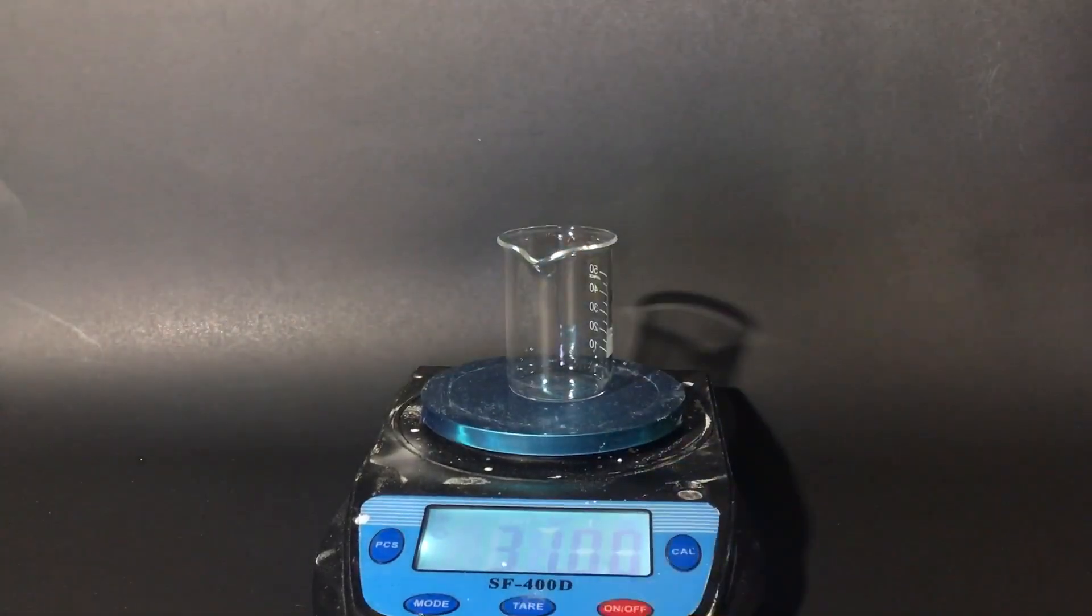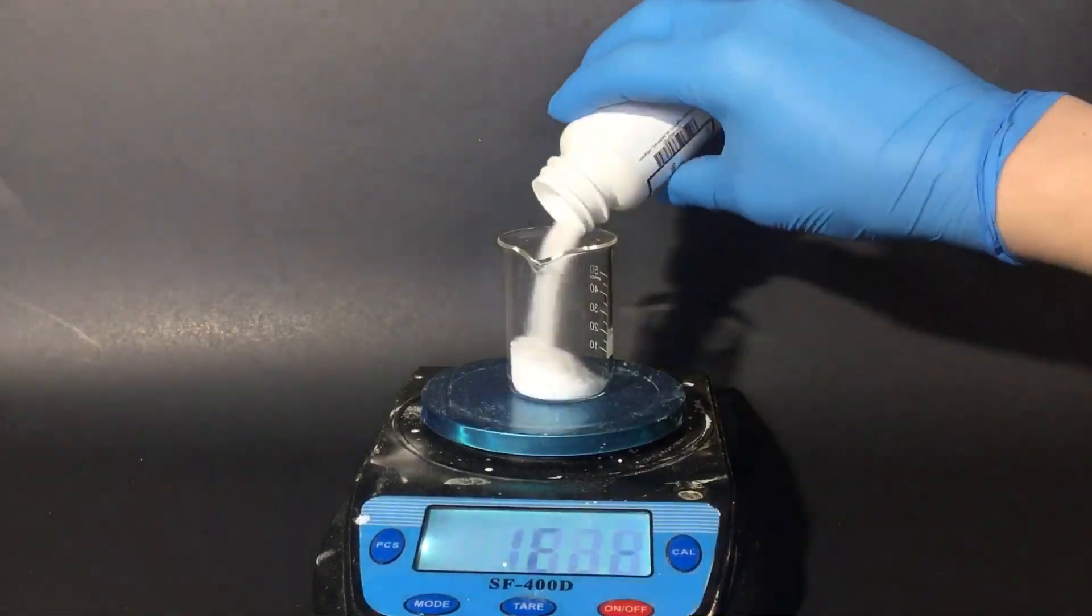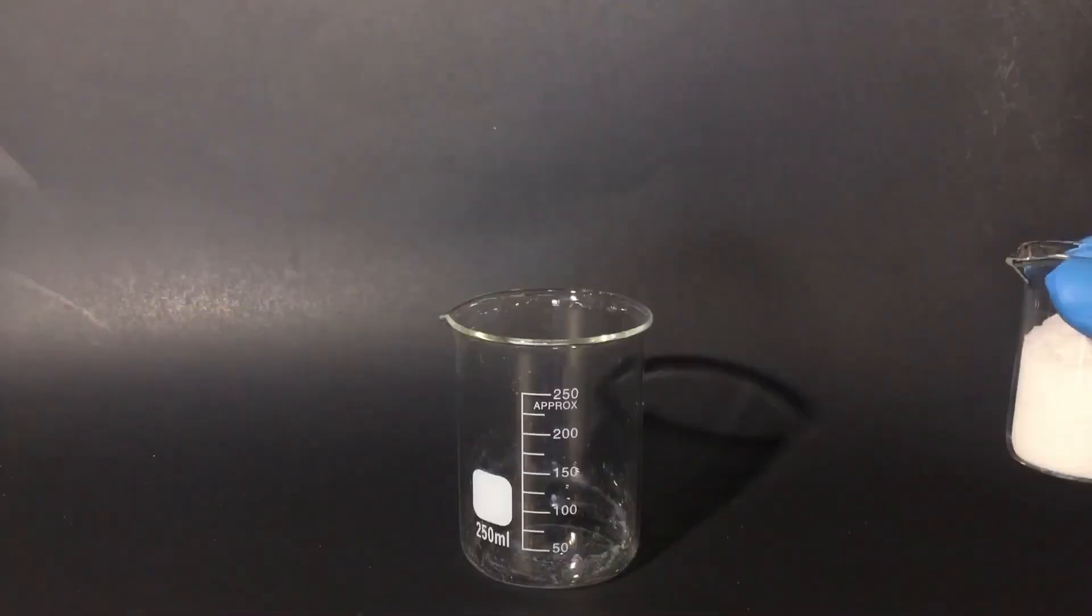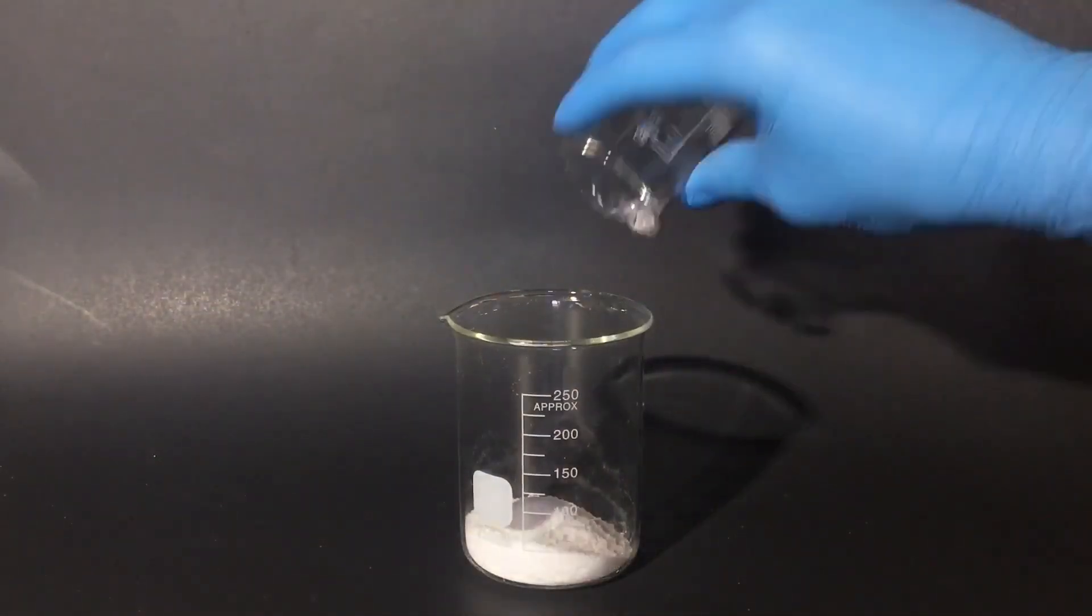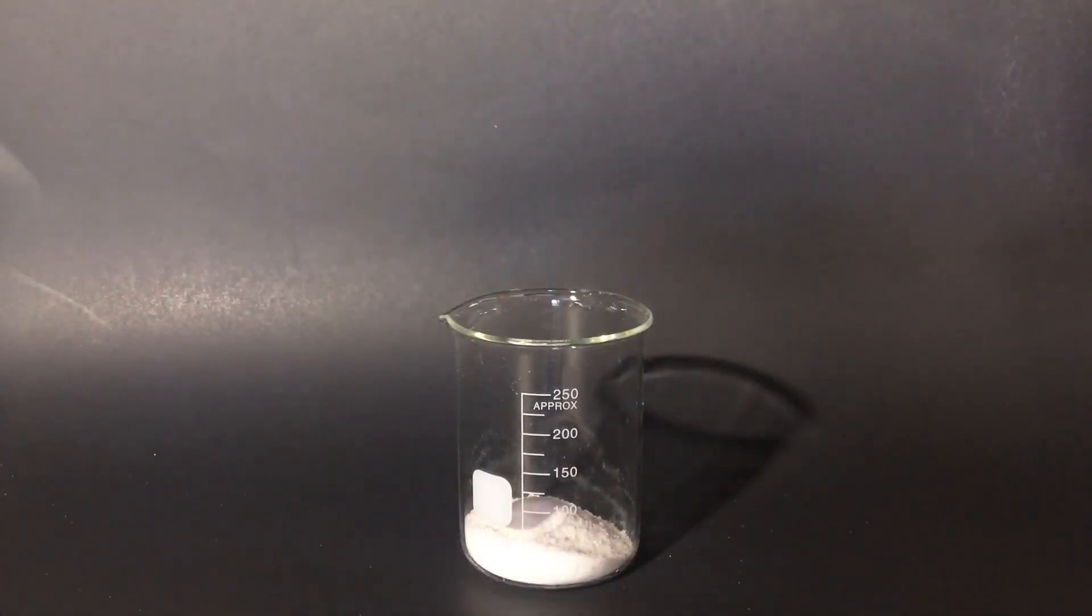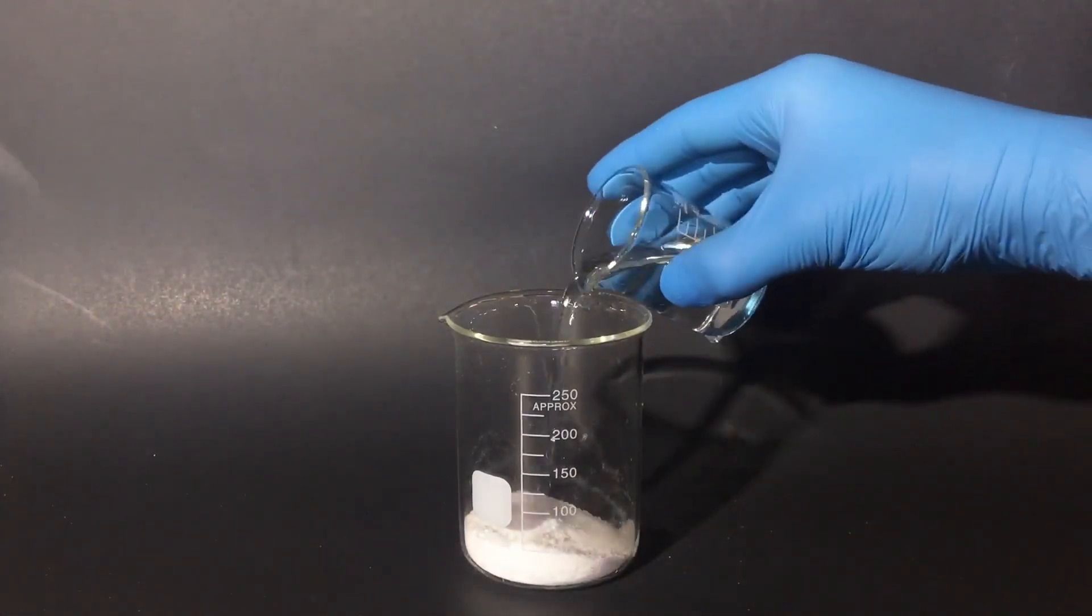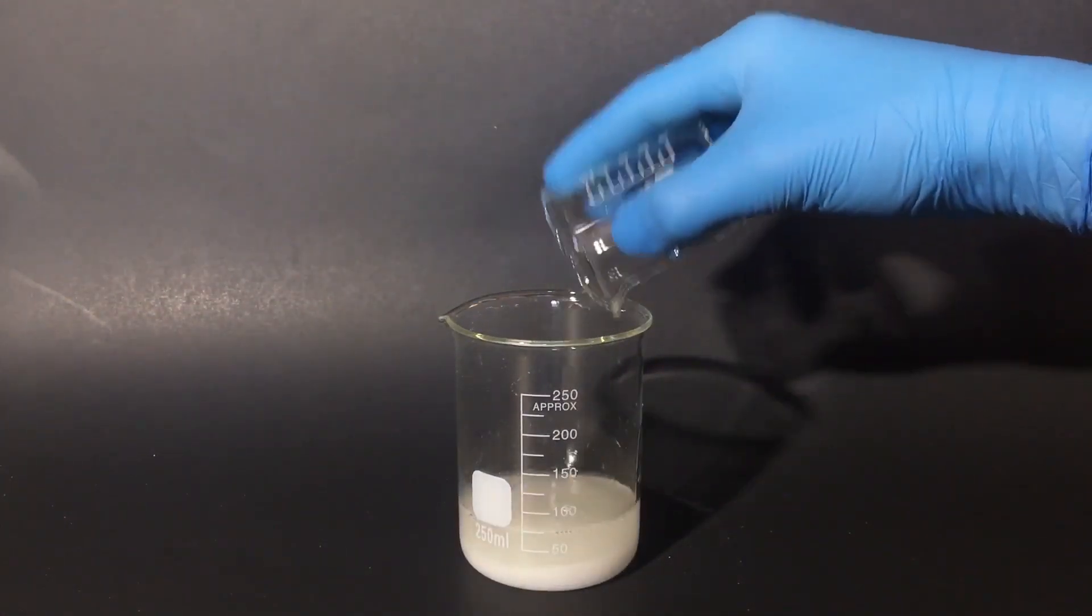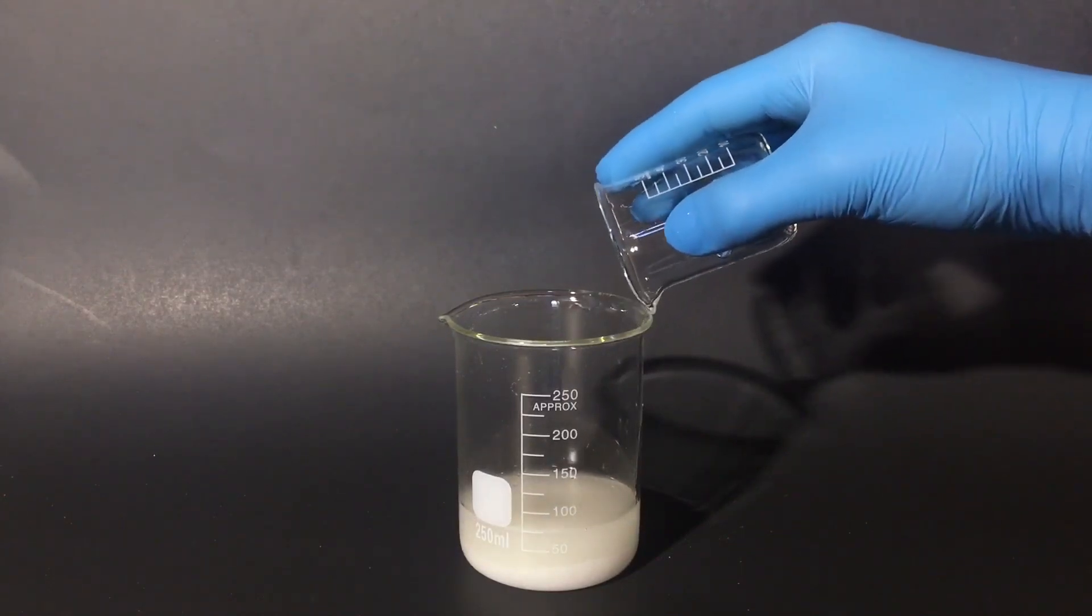First, I set my beaker on a scale and dump in all of my potassium iodide. After measuring it out, I add it all into a separate beaker, and then add an equal amount of water. In my case, I add in 26 milliliters, but you can use any amount, as long as they're equal.